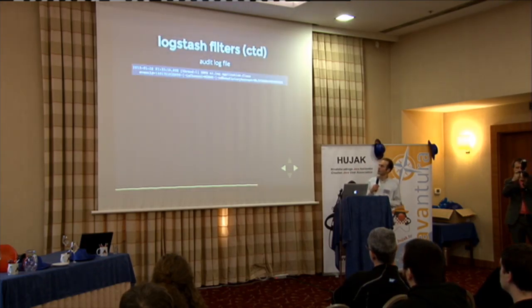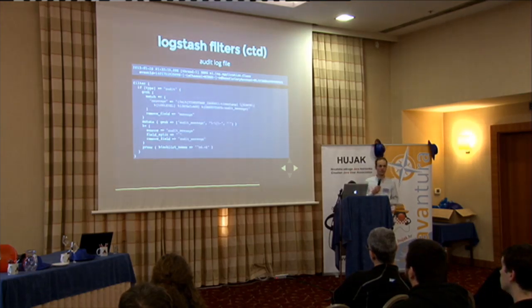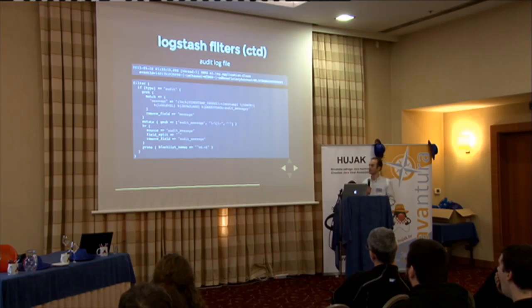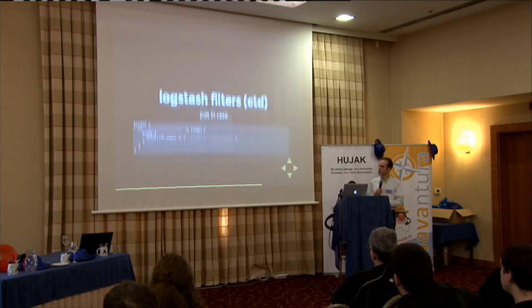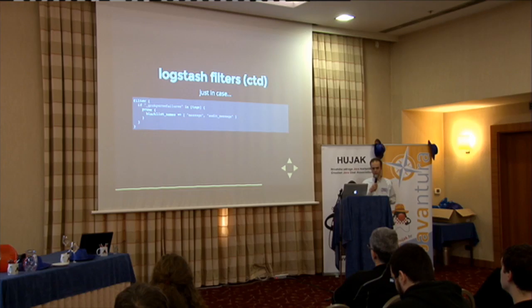We do the same thing for audit logging. This is an example of an audit log entry. As you can see, there are things like an IBAN — that's a bank account number — we need to remove that for sure. We split the log entry into parts, remove all parts we know are sensitive, and then remove the original line. In the end, you're left with a document that has a timestamp and some fields that are not considered sensitive. Just in case your pattern matching fails, you get an extra tag called Grok parse failure. If it's there, we remove everything, just to be sure.